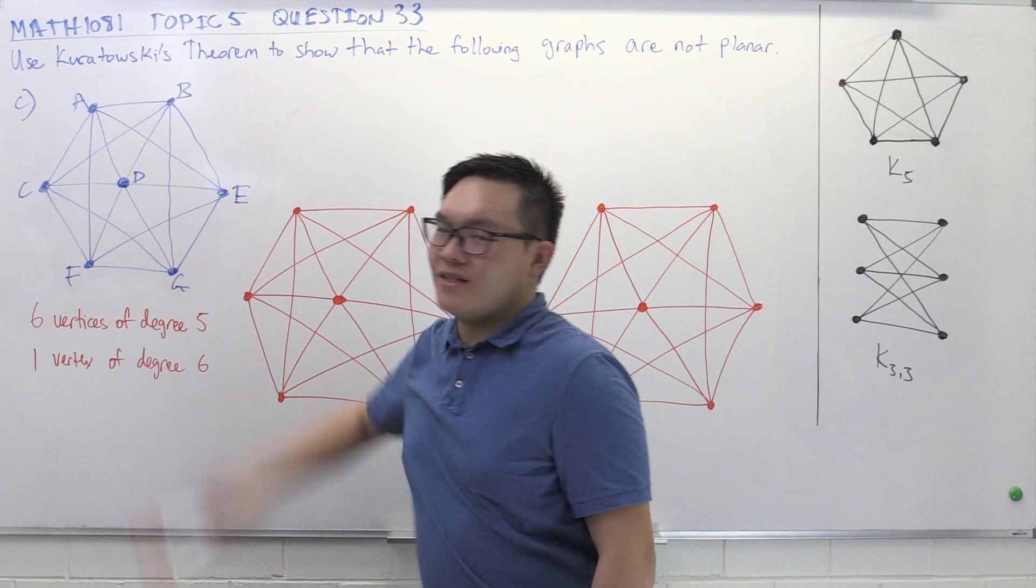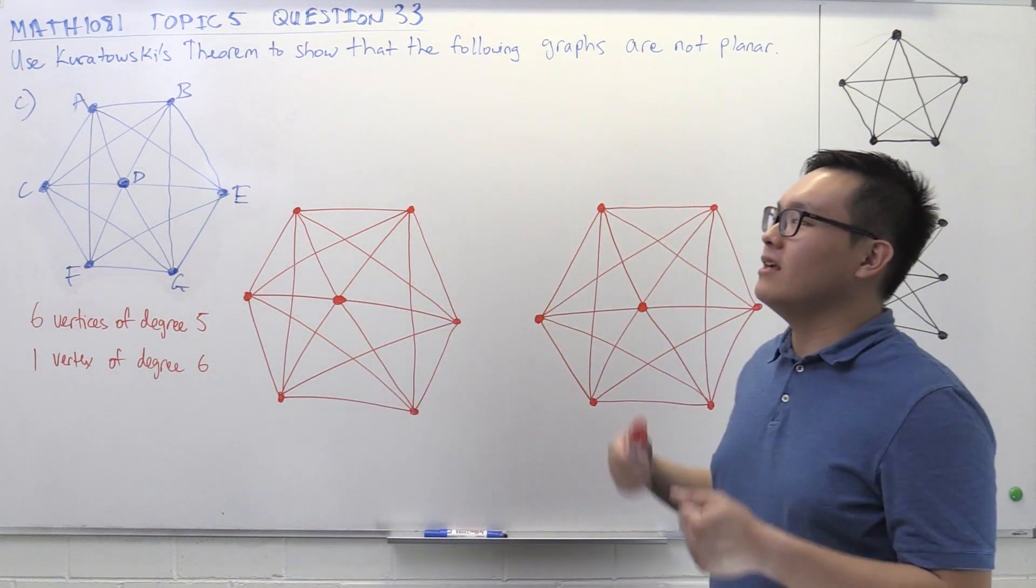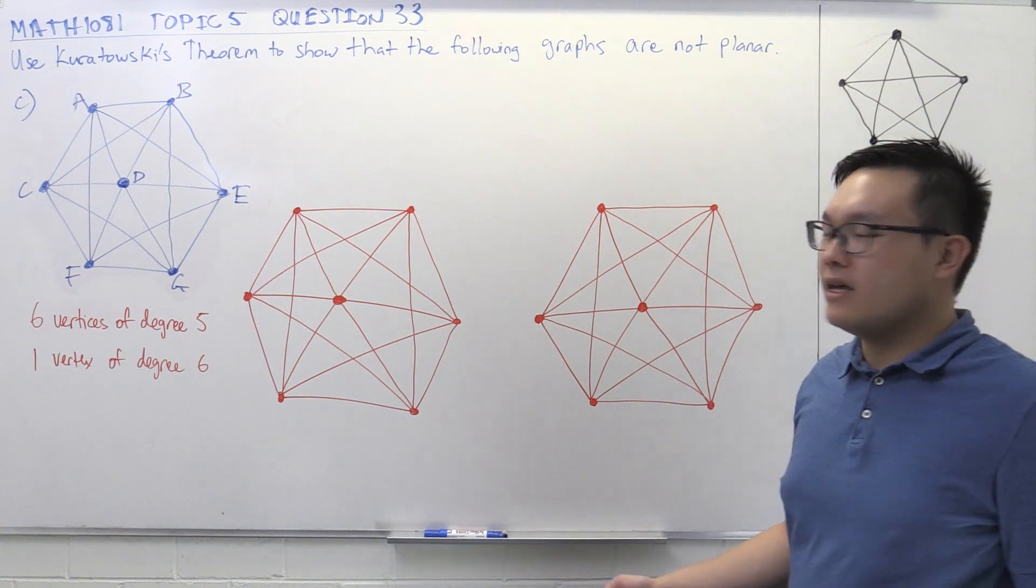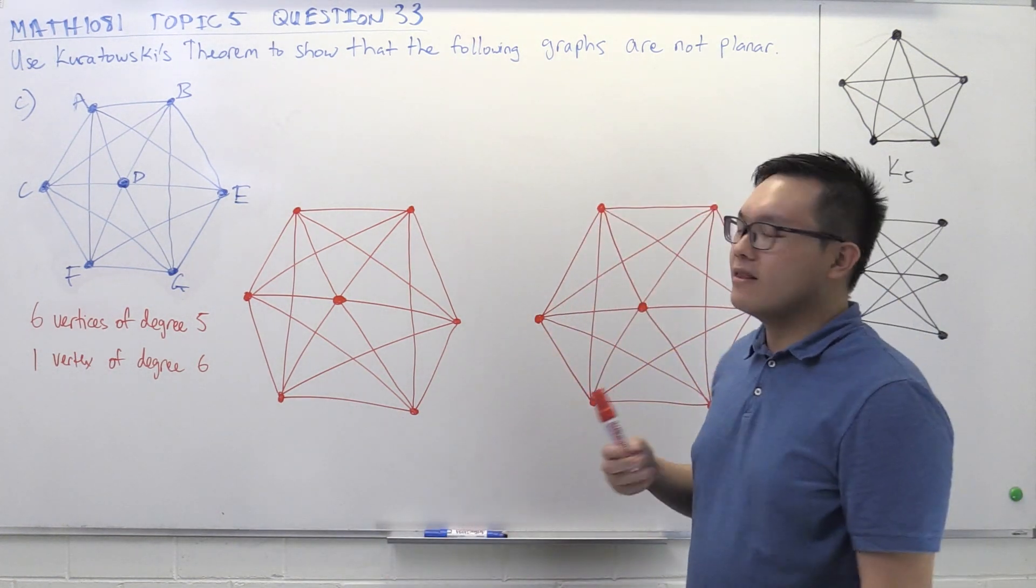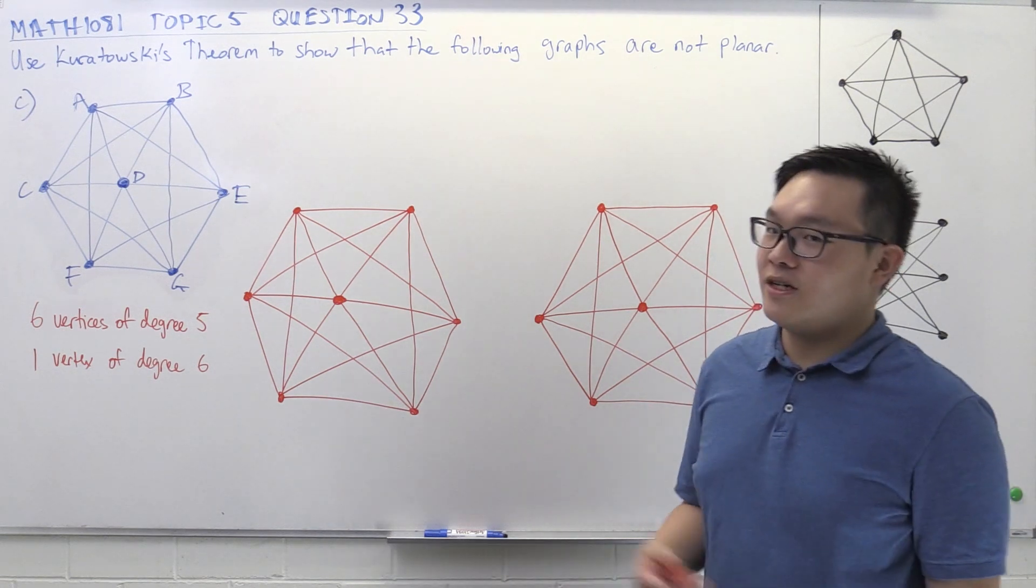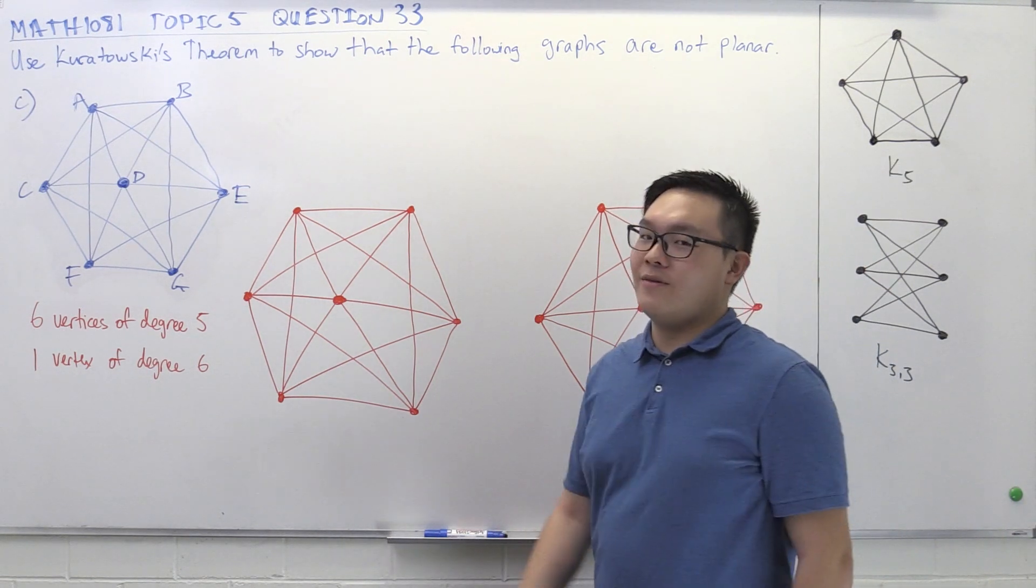If I just remove this vertex in the middle without removing the edges incident on that vertex, then it would be precisely a K6. And we can see that K5 is definitely a subgraph of K6, but K33, which has six vertices, is also definitely a subgraph of K6.